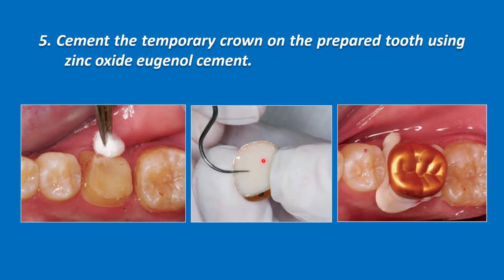But if the crown rocks while we place it on the prepared tooth, then the temporary crown should be lined with suitable acrylic temporary crown material. This is done by first applying a layer of vaseline on the prepared tooth, then filling the temporary crown with the material. When the acrylic reaches its exothermic reaction stage, heat will be generated, so we should remove the crown from the tooth to avoid damage to the pulp, then place it again and remove it repeatedly until full polymerization. Finally, we remove the excess material, smooth it, and cement it in place.